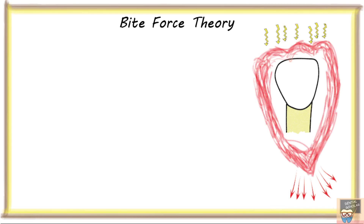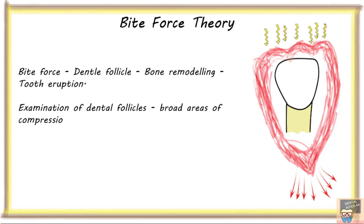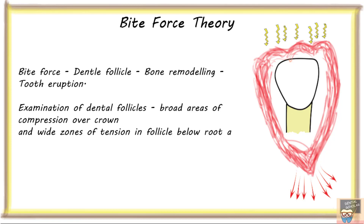The next theory is the bite force theory. According to this theory, bite force on the dental follicle causes bone remodeling which leads to eruption. Examination of the dental follicle reveals a broad area of compression over the crown and a wide zone of tension in the follicle below the root apices, resulting in bone resorption in the coronal part due to pressure and deposition in the apical part due to tension, thus aiding eruption.